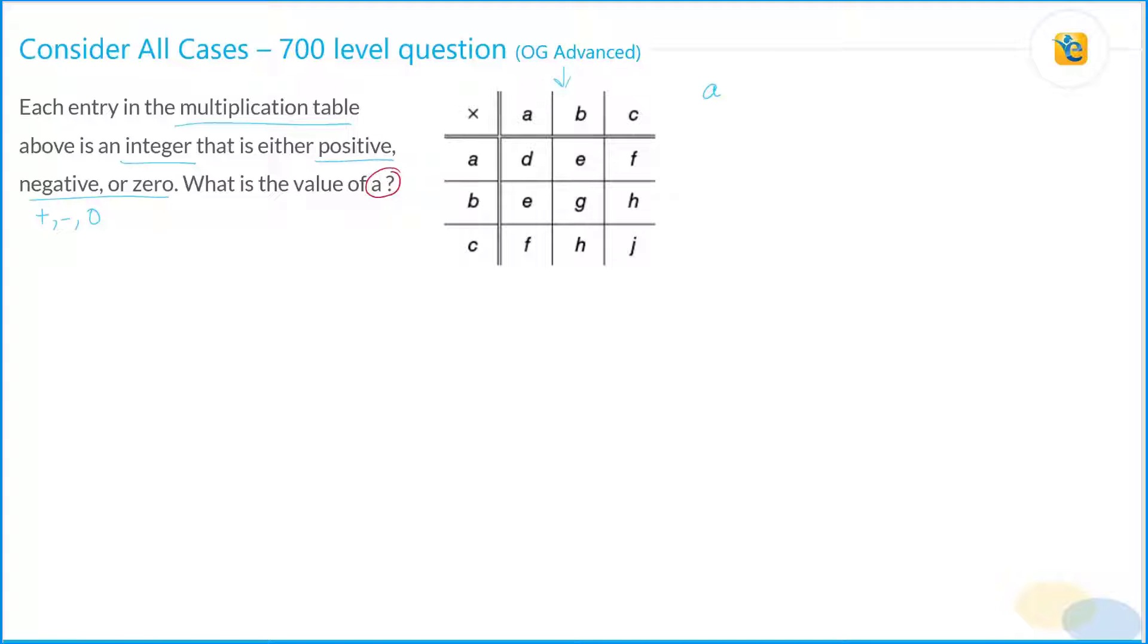So what we do is A times A, A squared is equal to D. Then you have A times B, A times B is equal to E. Then you have C times A, C times A is equal to F. Let's come to the next column. A, B, you already have this column. A times B, you already have E. B squared is equal to E. Then B times C is equal to H.